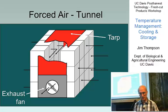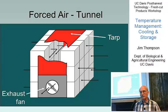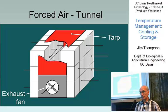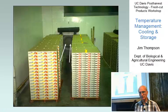That's what forced air cooling is about. You can see here there are two lanes of product in what looks like pallet bins. There's an empty space between them, and a fan evacuates air from that empty space. The tarp in red covers the empty space, so the air that's evacuated has to be replaced by air that flows through the product. It's a simple concept.